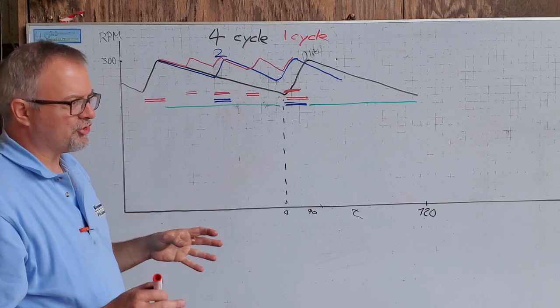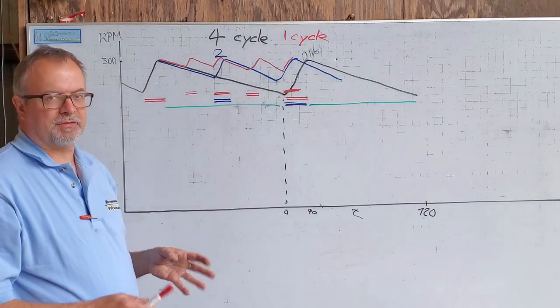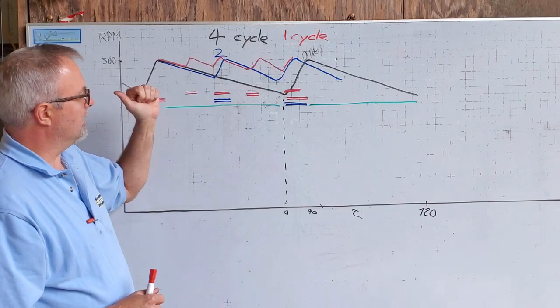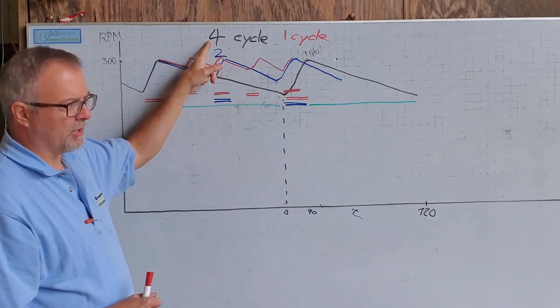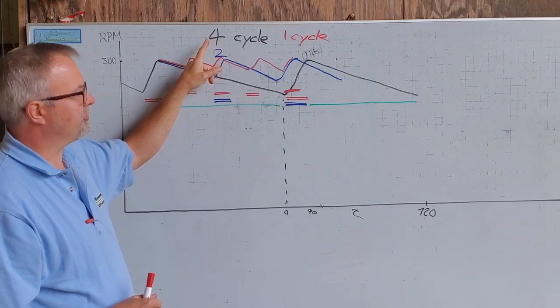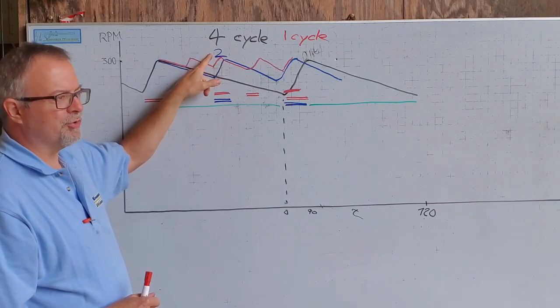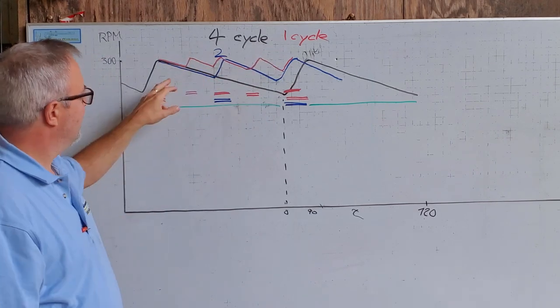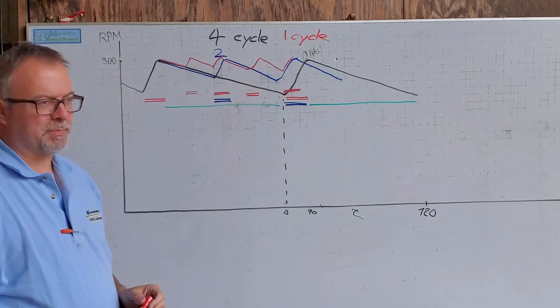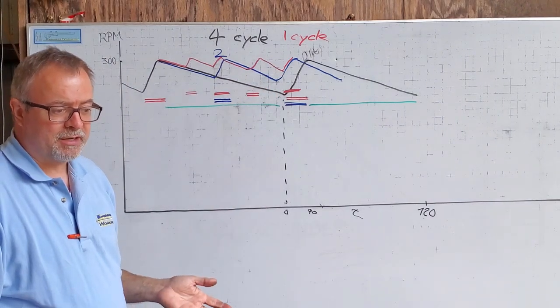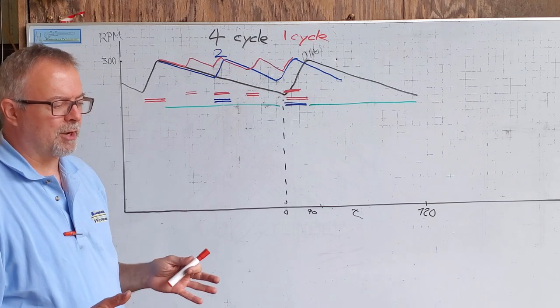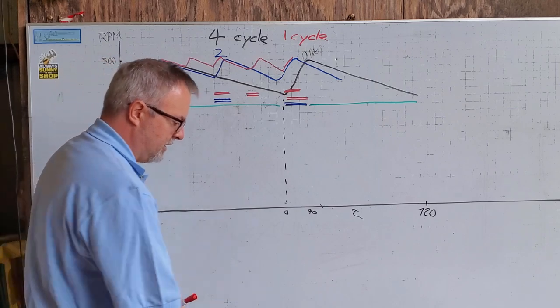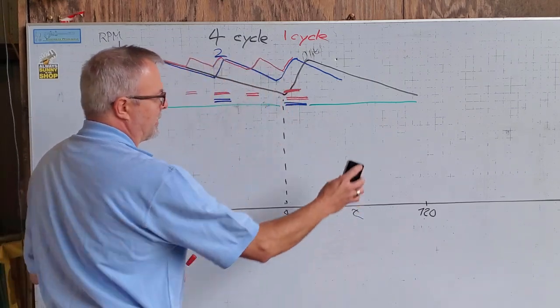So a steam engine, double-acting, for a given size flywheel is going to have the least amount of speed variation of a four-cycle, either auto cycle with a spark ignition or diesel, or a two-cycle spark ignition or diesel. The steam engine, being a one-cycle, is going to have the least variation in speed. So they were used for generating electricity because you could get the smoothest output from a steam engine. Now there's one other cause of speed variation in a flywheel that I wanted to go over.